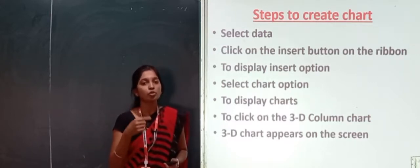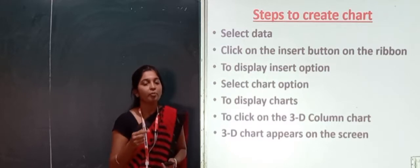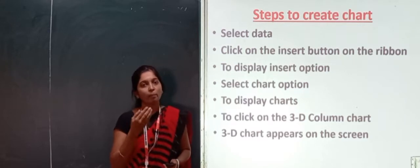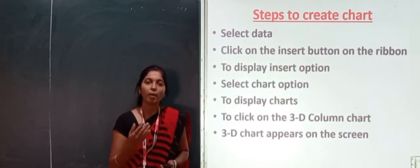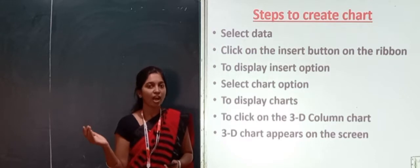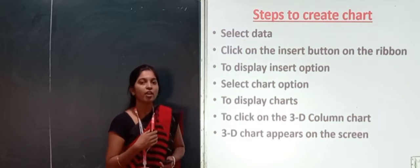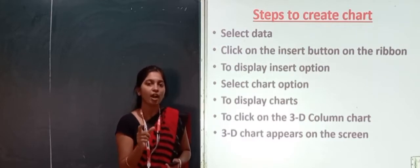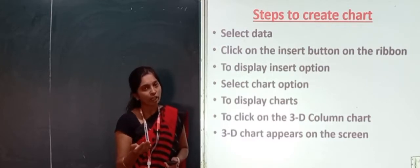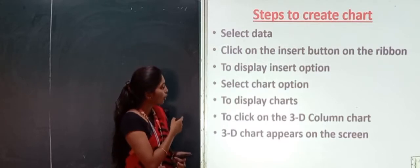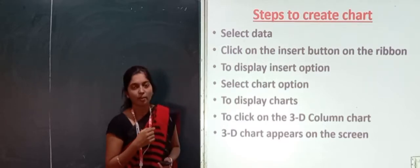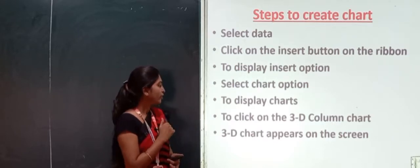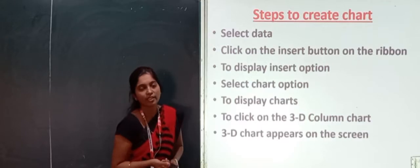So what you have to do is, you have to choose a particular chart. Which chart you want to use to represent your data. It may be bar chart, column chart, pie chart. There are 12 types of charts, we will discuss next. But in this particular, you have to select or choose a particular chart which you want to represent your data. To click on the 3D column chart. Suppose, you have to click on that, then 3D chart appears on the screen.